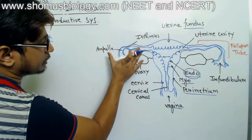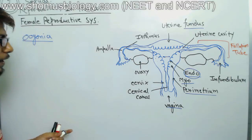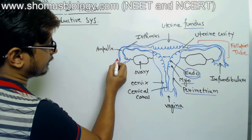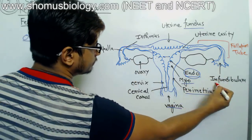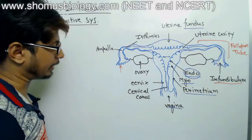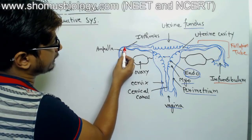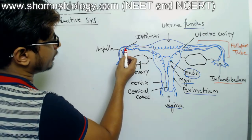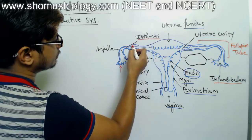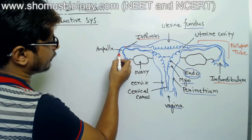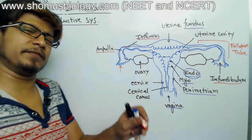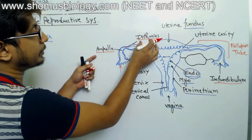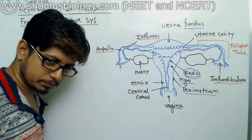Looking carefully at the fallopian tube structure, it has distinct regions. The end carrying the finger-like projections is called the infundibulum. Moving inward, there is a broad area known as the ampulla, and then the narrowest, most constricted area known as the isthmus, located closest to the uterus. So the regions in order are: infundibulum, ampulla, and isthmus.